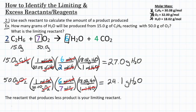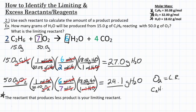For this problem we want to identify the limiting reactant and determine how many grams of H2O will be produced. The rule is simple: the reactant that produces less product is your limiting reactant, and that amount is what you will produce. We have 27.0 grams of H2O from C2H6 and 24.1 grams from O2. Since 24.1 is less, O2 is our limiting reactant and C2H6 is our excess reactant. We would produce 24.1 grams of H2O.